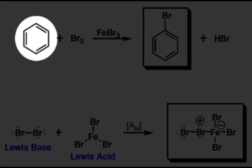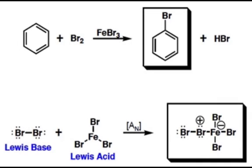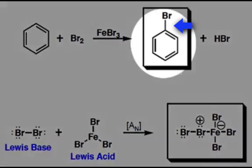A benzene ring with its 6 pi electrons is a site of electron density. Therefore, benzene can act as an electron donor, and most of its reactions take place with electron acceptors. In this example, benzene can react with bromine in the presence of a Lewis acid catalyst to yield the substitution product, bromobenzene.